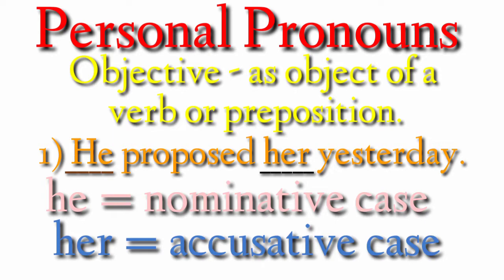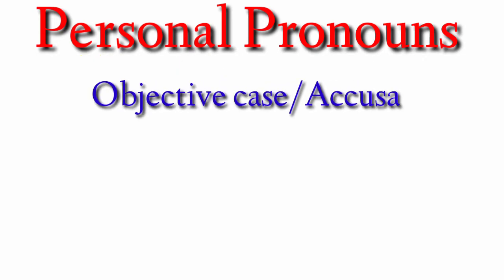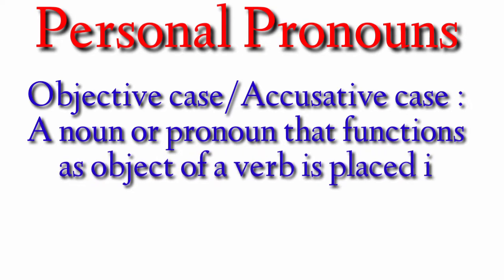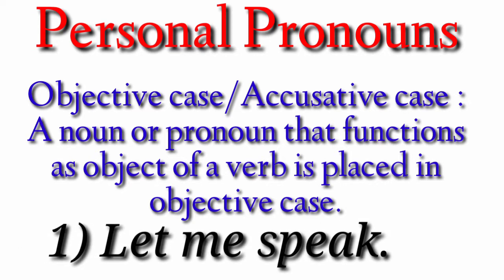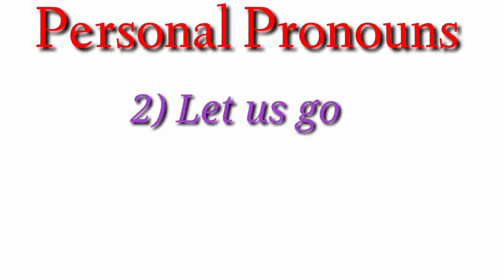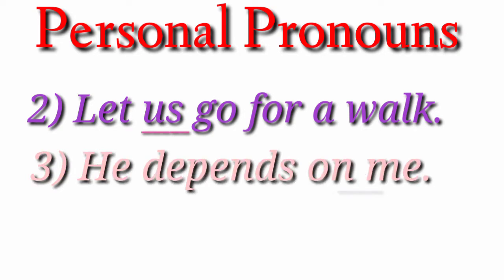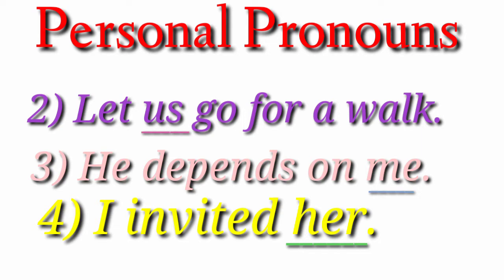'He' is subject of the verb 'proposed' and 'her' is object of the verb 'proposed' — that is the objective or accusative case. A noun or pronoun that functions as object of a verb is placed in the objective case. For example, 'Let me speak' — 'me' is in the accusative case, used as object of the verb 'let'. 'Let us go for a walk' — 'us' is object of the verb 'let'. 'It depends on me' — 'me' is object of the preposition 'on'. 'I invited her' — 'her' is the object of 'invited'.